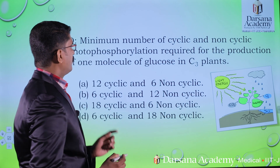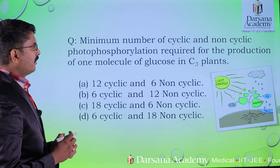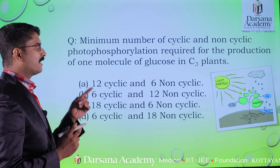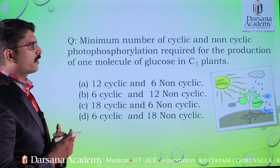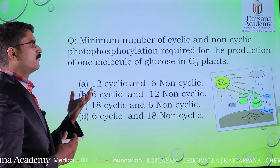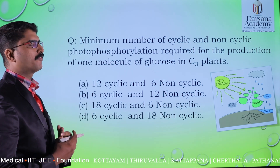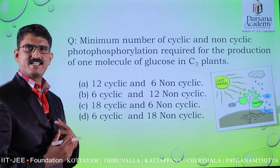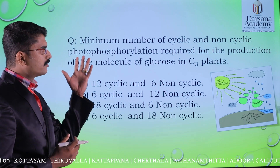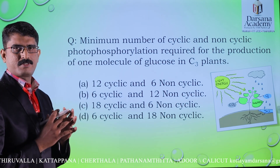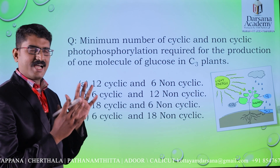Dear friends, welcome to Darshana YouTube channel. Today we are going to discuss a couple of questions from the chapter photosynthesis. The first question is: what is the minimum number of cyclic and non-cyclic photophosphorylation required for the production of one molecule of glucose in C3 plants? This is a combination of two concepts — first from the light reaction and second from the dark reaction.